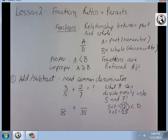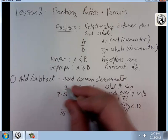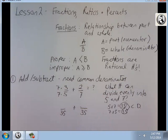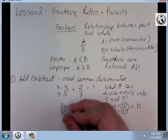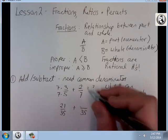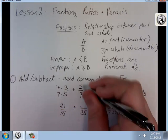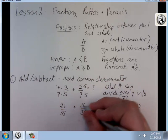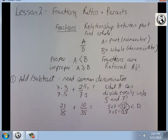So both of these have to now be out of 35. What times 5 gives me 35? The answer is 7. Whatever I multiply to my denominator, I have to multiply to my numerator. 7 times 3 is 21. The same thing over here. I multiply the denominator by 5, I have to multiply the numerator by 5, and I get 10. That gives me 31 out of 35.